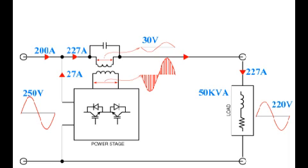This is the operation in buck mode. The input voltage is high at 250 V, so the PWM is generated in the opposite phase — 180 degrees out of phase with the input — and the voltage is subtracted from the input, giving a constant 220 V output. The input current is only 200 A because the voltage is 250 V, and 27 A flows back through the mains from the IGBT.